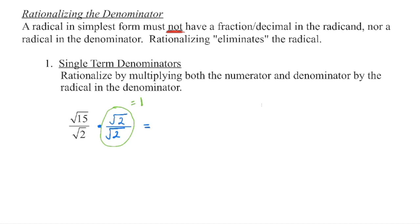Now we multiply: the square root of 15 times the square root of 2 gives the square root of 30 in the numerator. In the denominator, the square root of 2 times the square root of 2 gives the square root of 4, which equals 2. So we get the square root of 30 divided by 2. Check: no perfect square in the radicand, no fractions or decimals, no radical in the denominator. This is our final answer. We call this rationalizing the denominator.